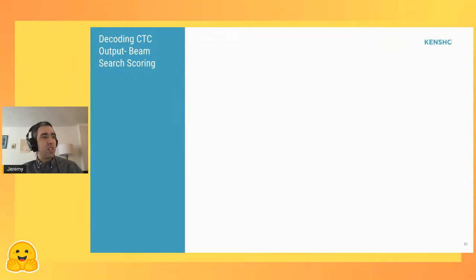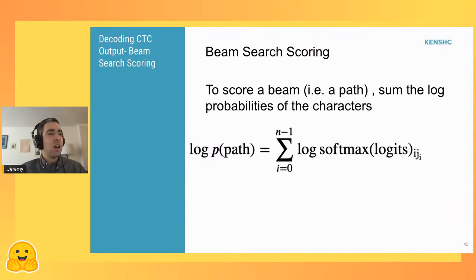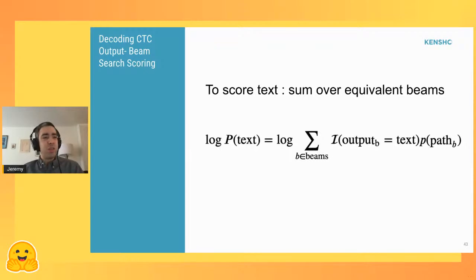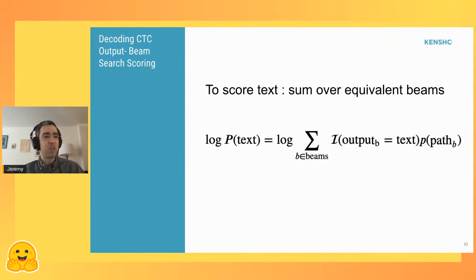When scoring beams at each position, to score a path you take the sum of log softmaxes of your logits. Then you may get multiple paths that give the same output, so you want to sum probabilities over equivalent beams — choose any beams that give the exact same output and add together those probabilities. That gives you the probability of getting some output text.